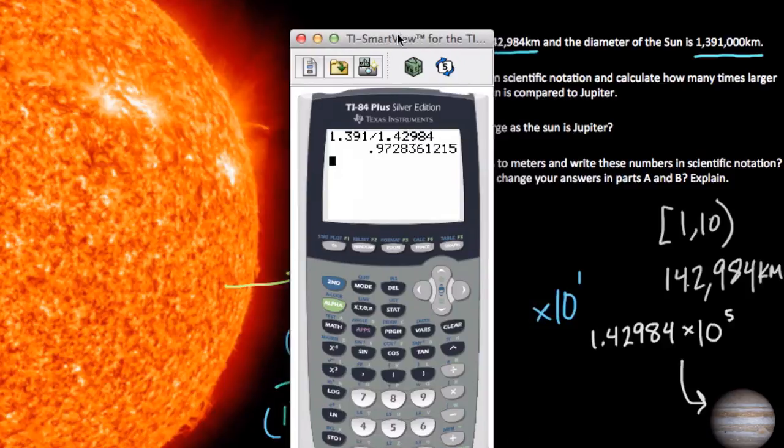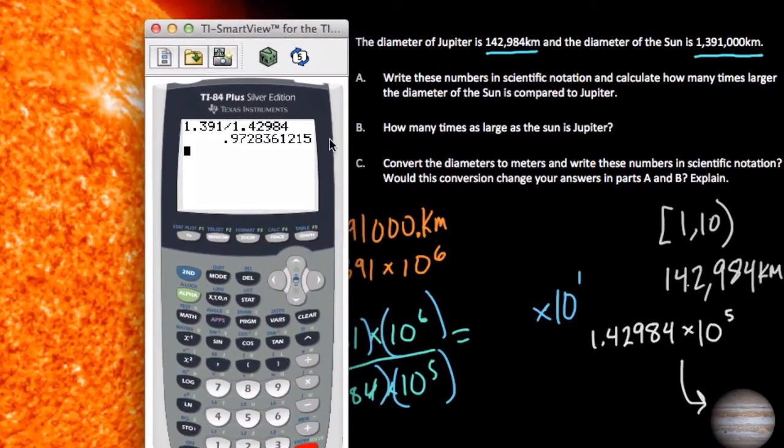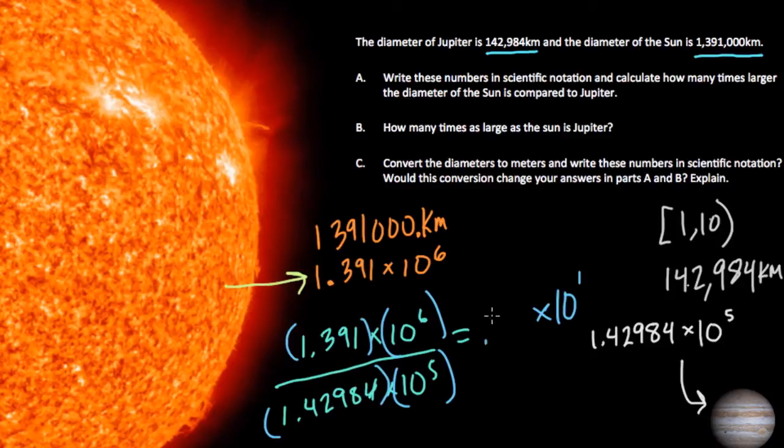So they don't tell us how they want us to round or estimate this problem. I'm going to round it to 0.9728. I'm going to use the 3 as my rounding location. And remember, a number less than 5 tells us to leave the number as it is, or some people say round down. So here we just get 0.9728.